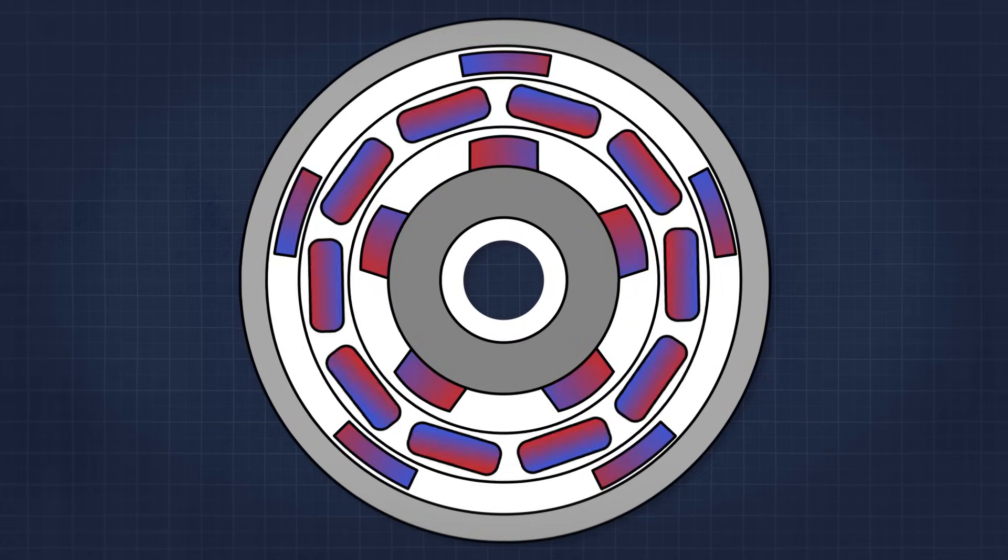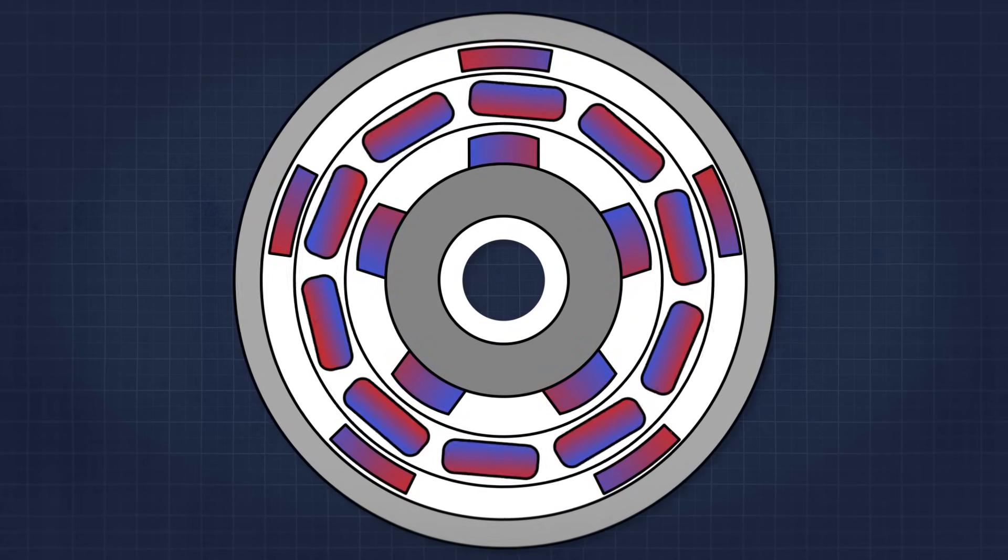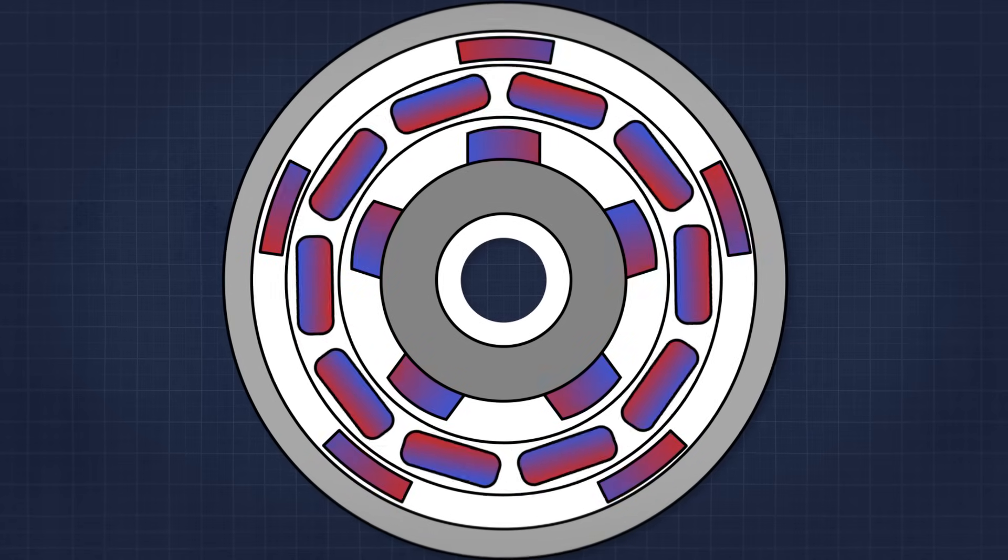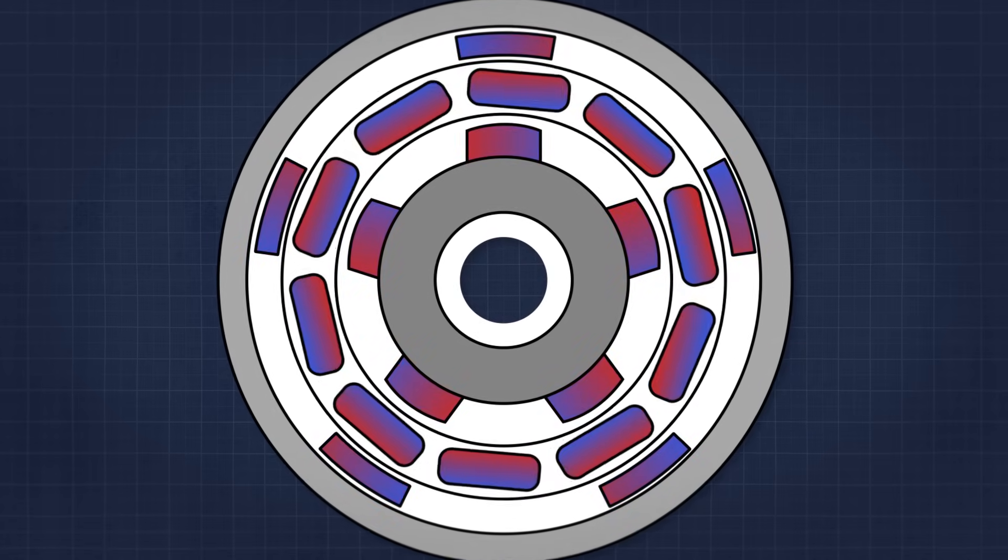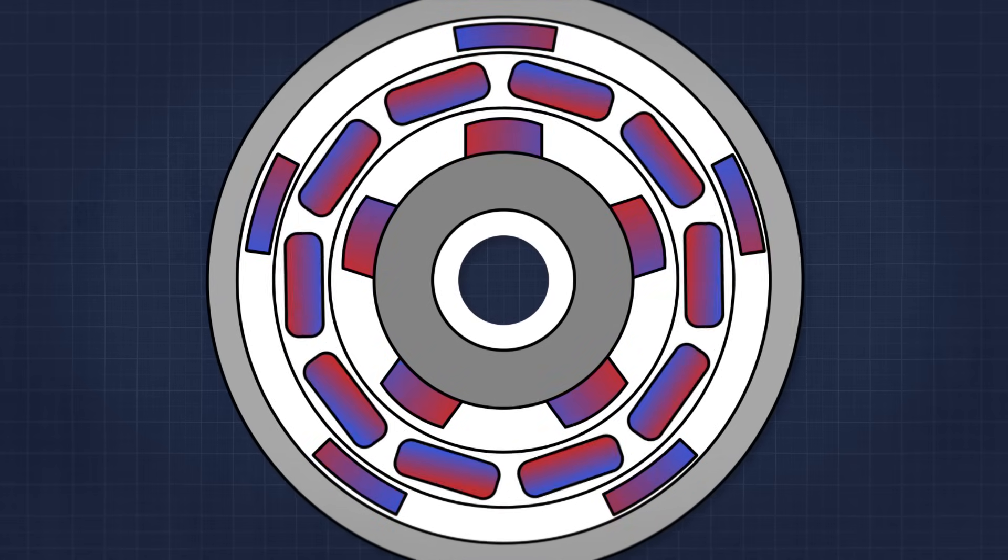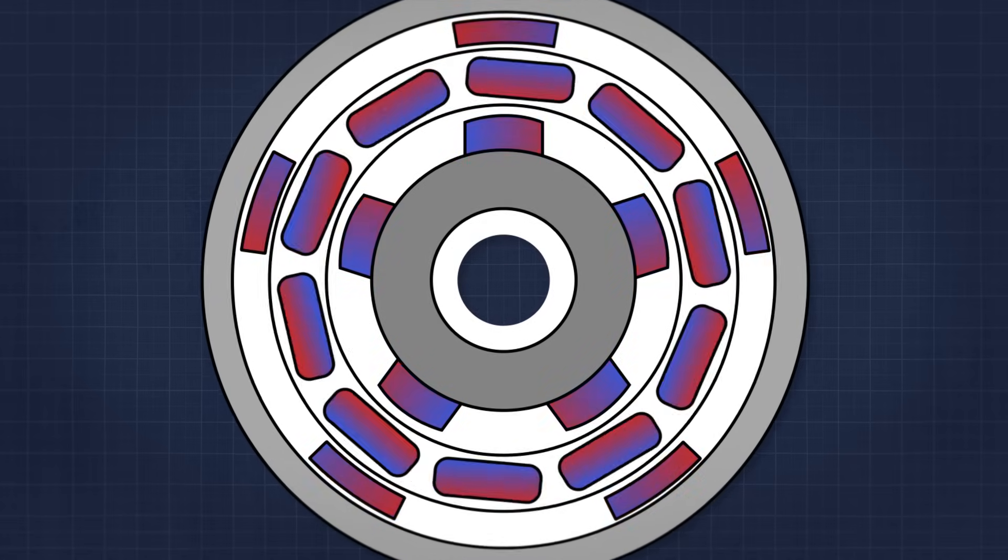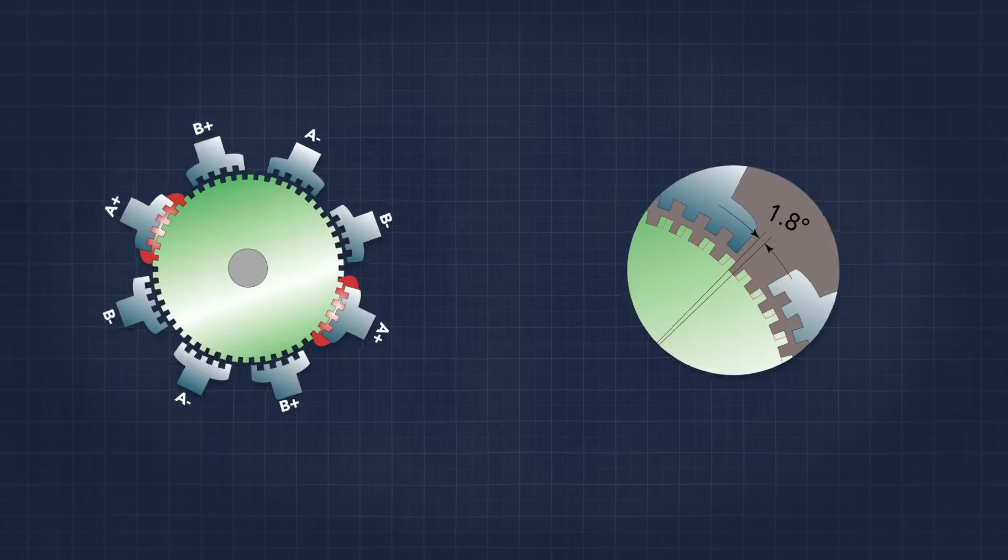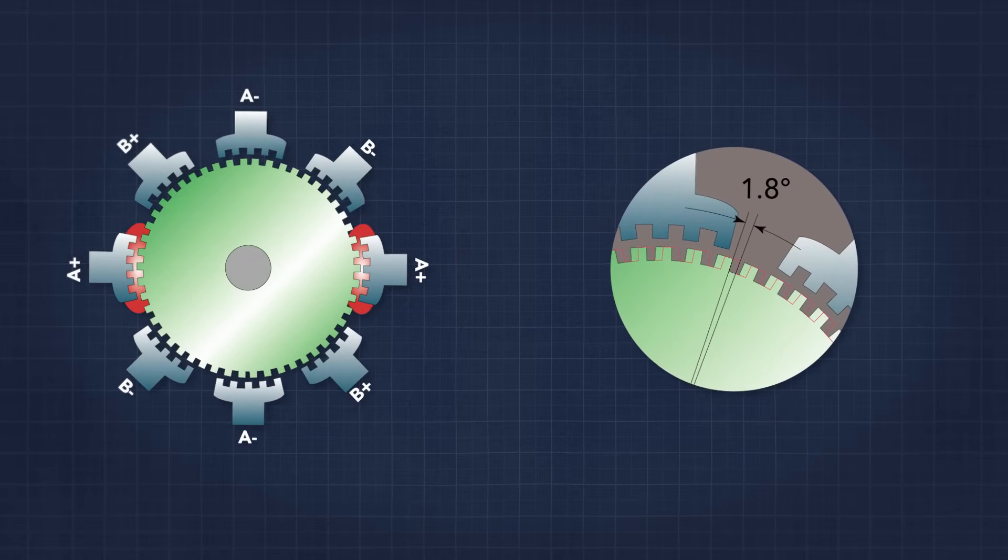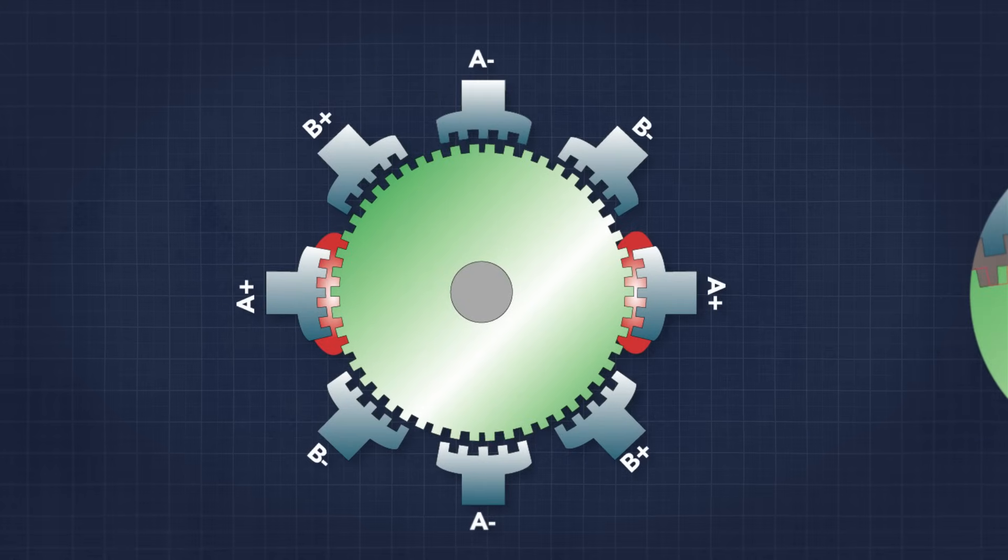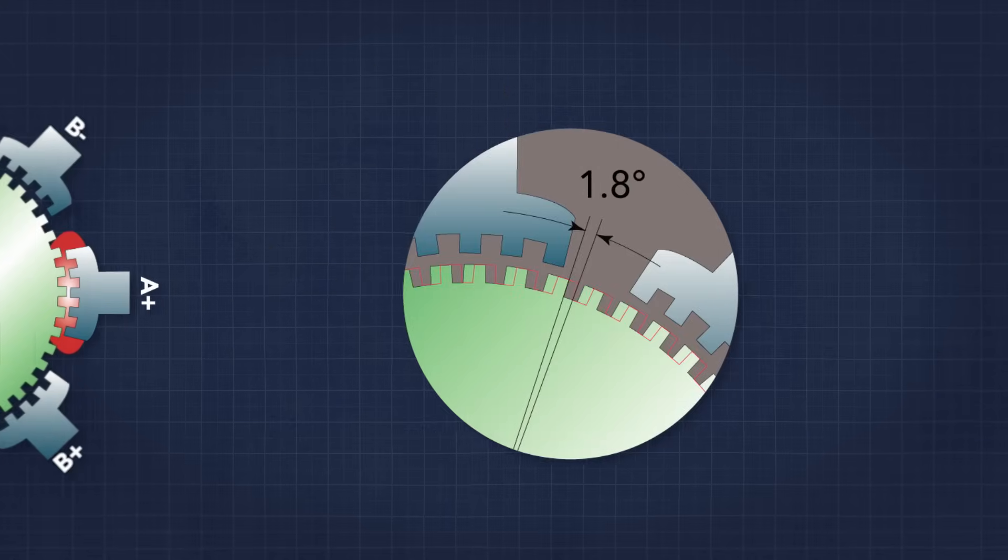Steppers are typically classified by the number of allowable steps they can be commanded to move. For instance, a 1.8 degree step motor is capable of 200 steps per revolution as 1.8 times 200 equals 360 degrees or one full revolution. Of course, that's in full step mode. If operated in half step mode, each increment becomes 0.9 degrees and the motor can then turn 400 steps per revolution.